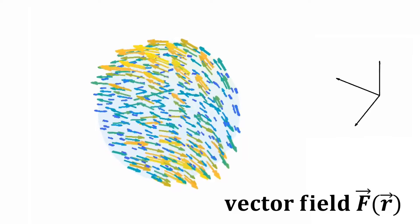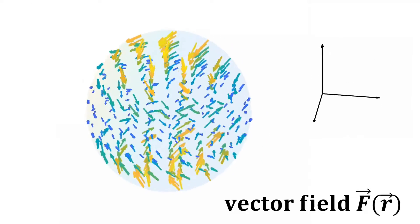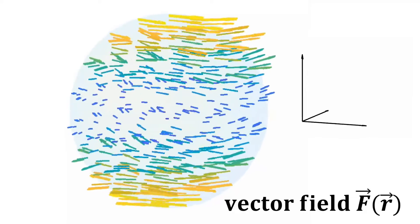For a well-behaved vector field, or one that is continuous, there is a more intuitive way of deconstructing the vector field into its constituents.